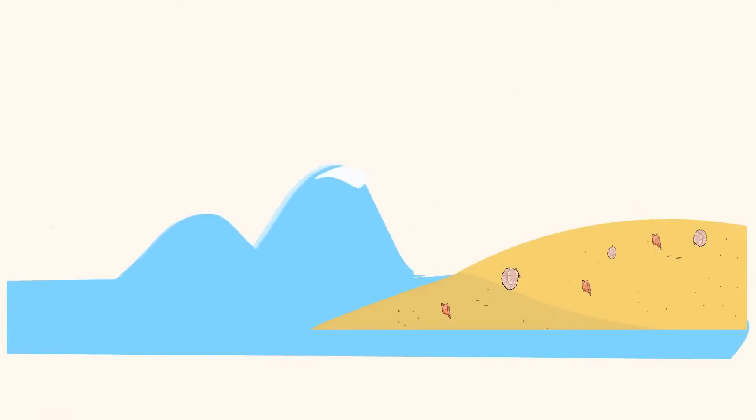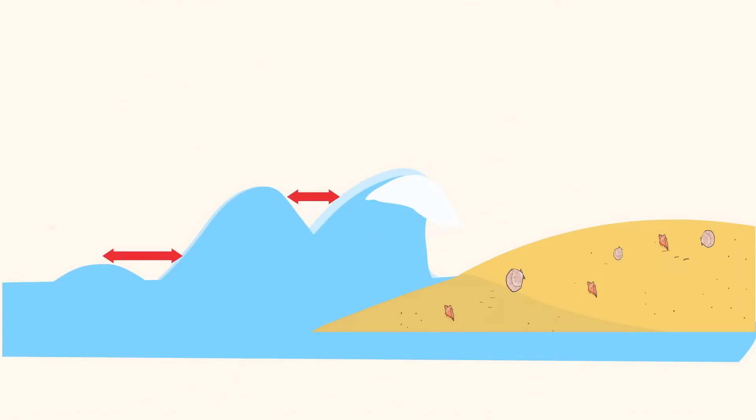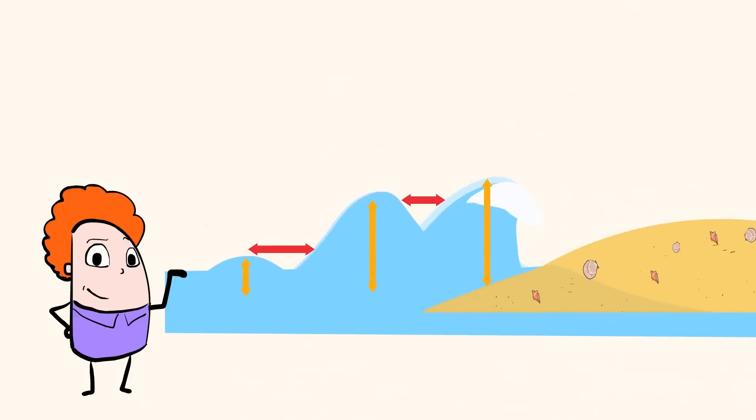As ocean waves get closer to the shore, the water gets more shallow. And this causes the waves to slow down and get closer together. When this happens, the wavelength gets smaller and the height of the wave increases. Waves in the ocean can be a lot of fun. But we have much more to investigate on land.